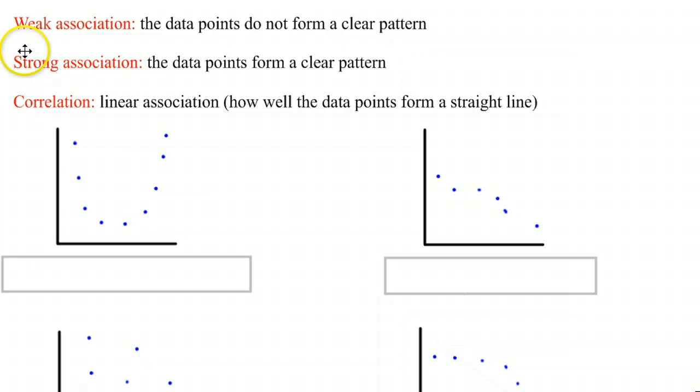We're going to take a look at correlation using the correlation coefficient r and its close friend r squared. First thing is talking about association versus correlation.